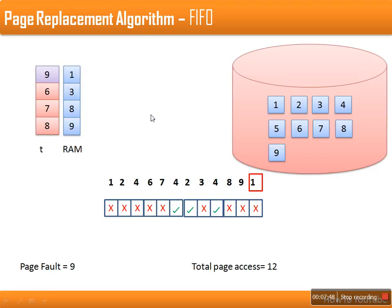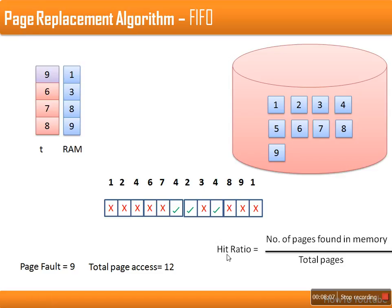In total, we referenced 12 pages, and out of 12 there were nine page faults and three page hits. The efficiency of a page replacement algorithm is measured using the hit ratio formula: how many pages were found in memory while referencing. In our case, total pages referenced are 12, pages found in memory are 3, so the hit ratio is 3/12. Thank you very much for watching.